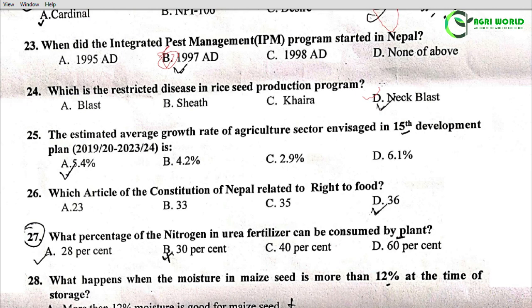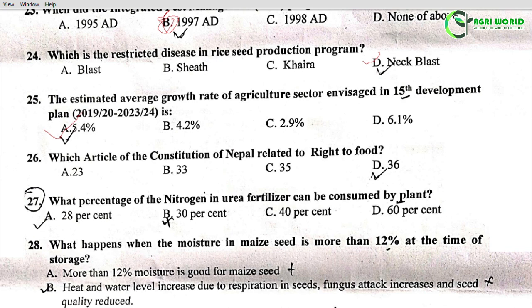Question 25: The estimated average growth rate of the agriculture sector envisaged in the 15th development plan is: Options: 5.4%, 4.2%, 2.9%, 6.1%. The correct answer is Option A: 5.4%.